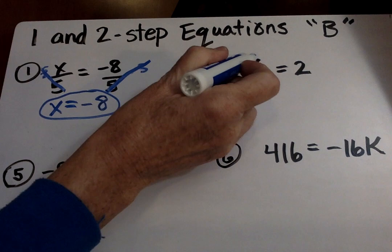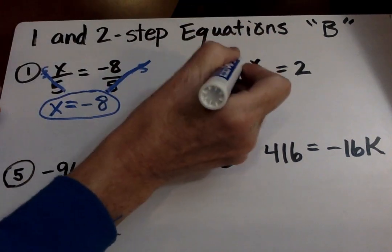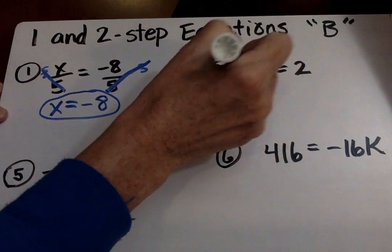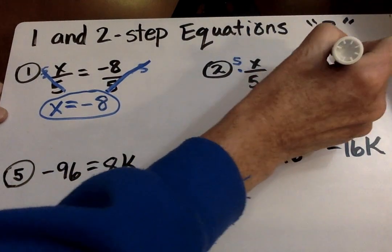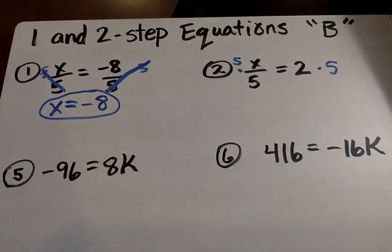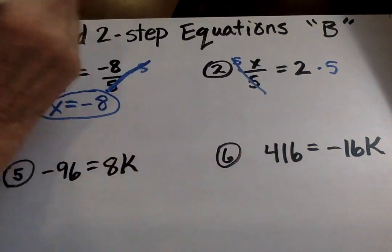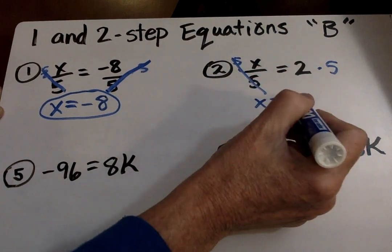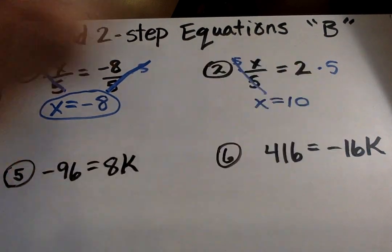Here it has a five on the bottom. There's my variable. So I'm going to multiply by five here, because it's divided by five. Whatever I do on one side of the equation, I have to do on the other. So then, five times that will cancel out. X equals two times five is ten.